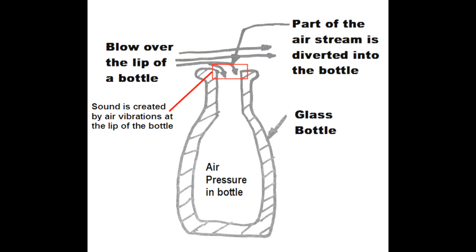When blowing into a bottle, you blow over the lip of the bottle. Part of the air stream is diverted into the bottle. Air pressure builds up inside the bottle. What is very important to remember is that the sound is created by air vibrations at the lip of the bottle. So when you blow over the lip of a bottle, part of the air stream is diverted into the bottle, air pressure builds inside, but the sound is created by air vibration at the lip of the bottle.